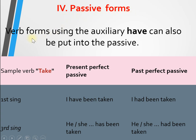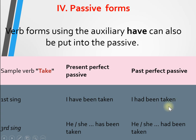Passive forms: verb forms using the auxiliary 'have' can also be put into the passive. Present perfect passive and past perfect passive examples — first singular and third singular: 'I have been taken', 'I had been taken', 'he or she has been taken'.